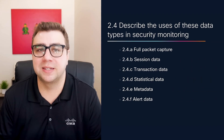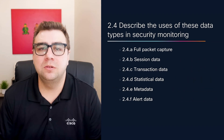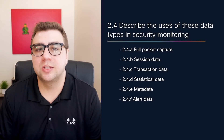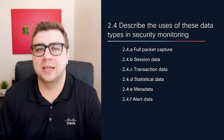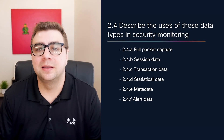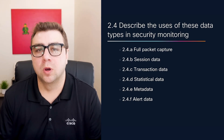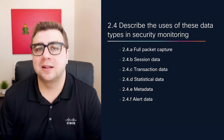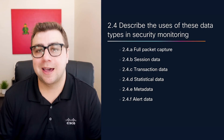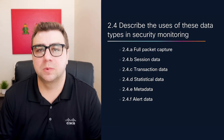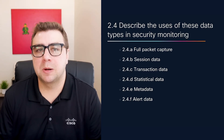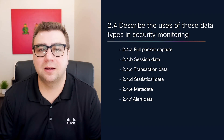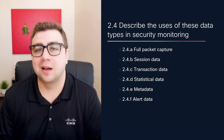Then we get into types of monitoring data. These include full packet captures, session data, transaction data, statistical data, metadata, and alert data. These are often used together in real-world monitoring. For example, an alert might trigger an investigation where you then pull metadata or session data to understand what happened. If things get serious, you might even review full packet captures to confirm exactly what was exchanged between systems. The more familiar you are with these data types, the better prepared you'll be to analyze logs and traffic flows — not just for the exam, but on the job too.